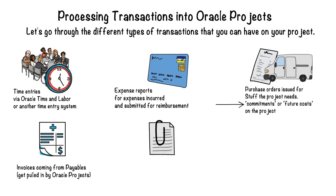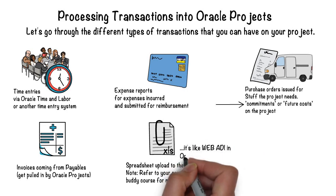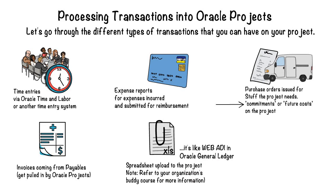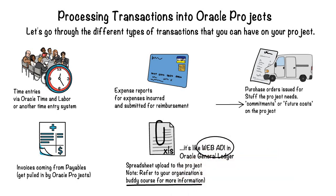And finally, in some organizations, we actually have the ability to upload a spreadsheet of transactions directly to the project. This is essentially synonymous to the spreadsheet upload of journal entries into the general ledger. We call them Web ADIs into Oracle Projects. Refer to your organization's buddy course for more information on spreadsheet upload.